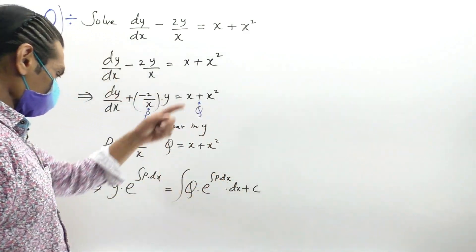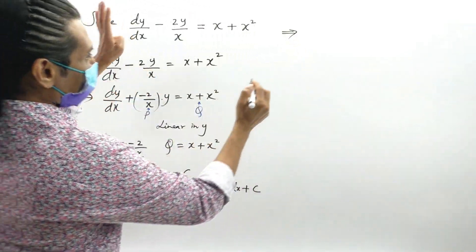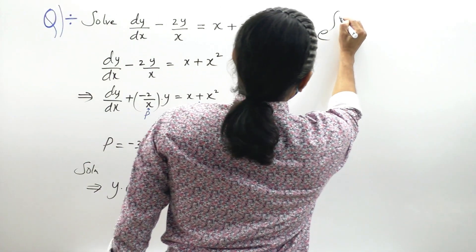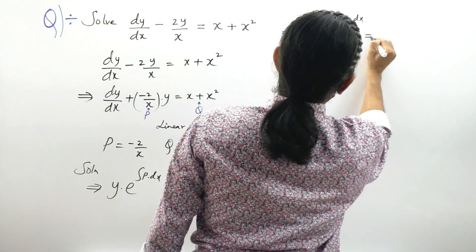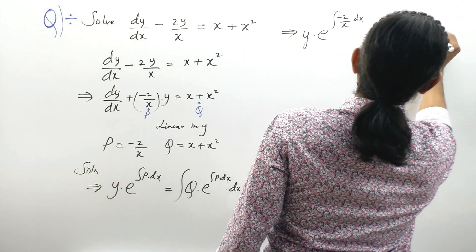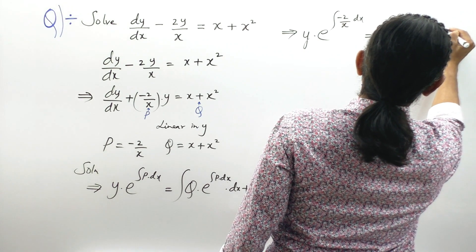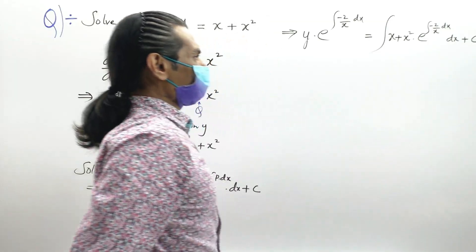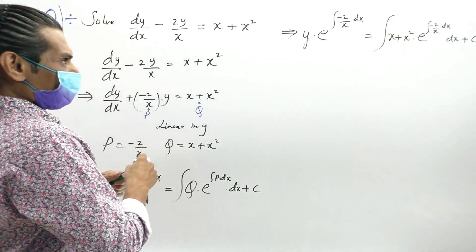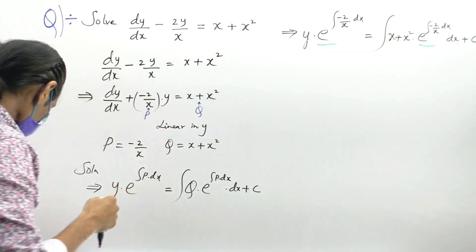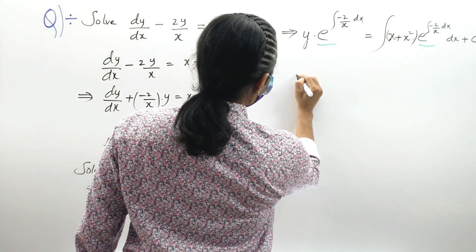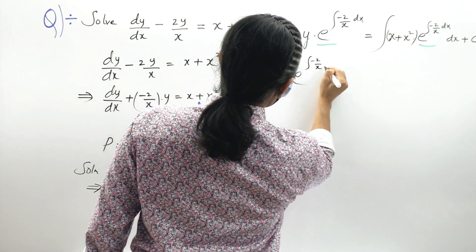The solution is: Y · e^(∫P dx) = ∫[Q · e^(∫P dx)] dx + C. Now we find e^(∫P dx) = e^(∫−2/x dx) = e^(−2·∫1/x dx) = e^(−2 log x). Using the log property: −2 log x = log(x^(−2)), so e^(log x^(−2)) = x^(−2) = 1/x².